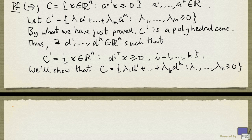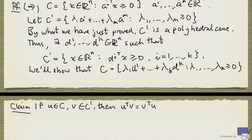First of all, we make the following claim. If you take u in C and v in C', then u^T v, or v^T u, is at least zero. And this is easy to check from the way C' is defined.